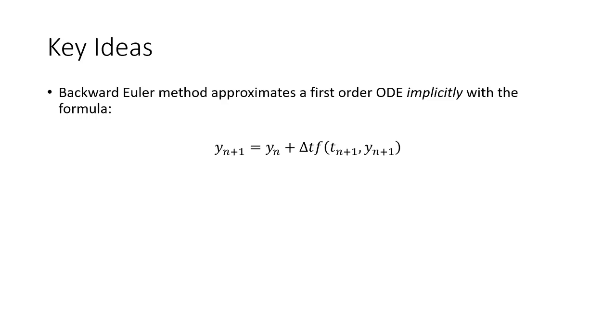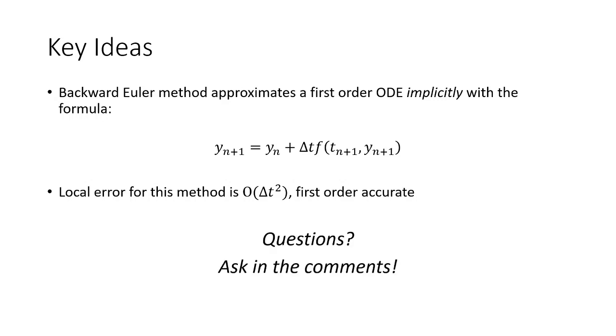But main takeaways here, the backward Euler method is another method for approximating first order ordinary differential equations. It's an implicit scheme with the following formula. Local error is delta t squared accurate. And if you have any questions about the method, applications, or how we arrived at this formula, feel free to leave them in the comments. Thanks.